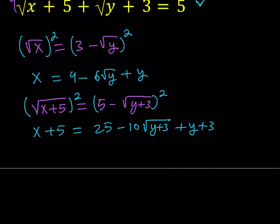Let's simplify this a little bit. We have 25 plus 3 equals 28, and when I subtract 5 it's just going to be 23. So I can write it as x equals 23 minus 10 times the square root of y plus 3, plus y.